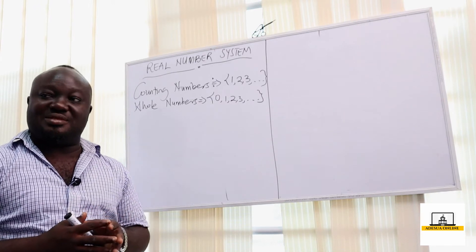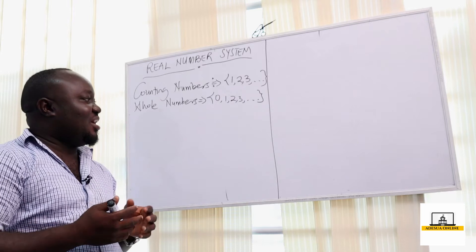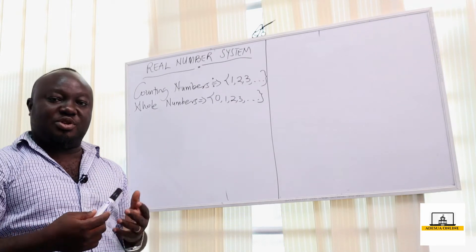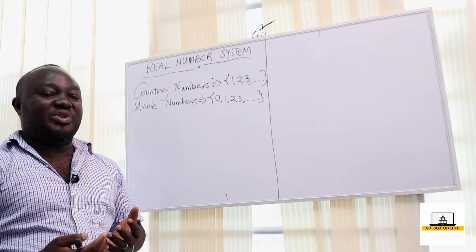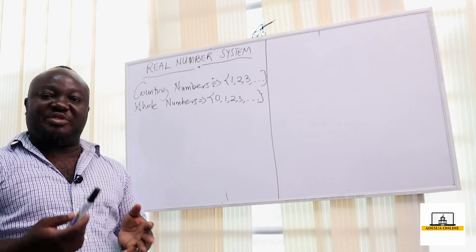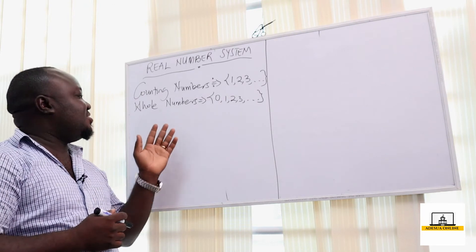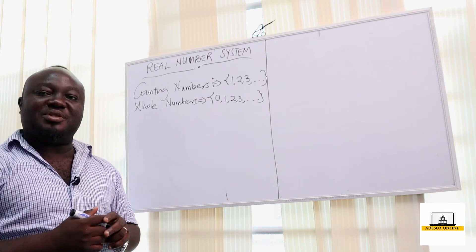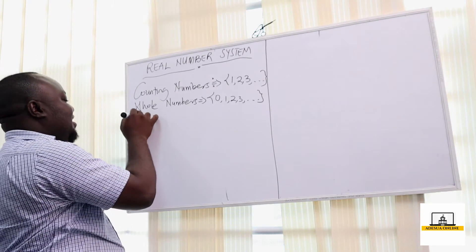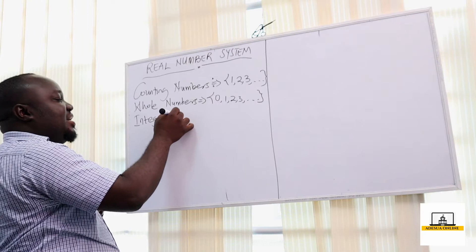Again, when we use the operation subtraction on a set of natural or whole numbers, we can have 3 minus 1 which gives us 2, which is part of the counting numbers. But 5 minus 7 is minus 2, which is not part of the set of counting numbers. So we call them integers.